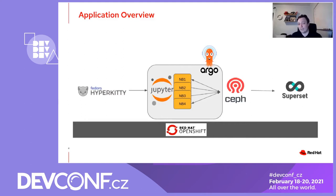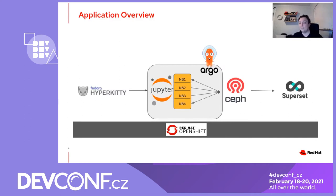Apache Hive and Superset work in tandem to serve as the front-end and user interaction layer of the application. As long as the Argo workflow runs and the notebooks are pushing new results to our Ceph remote storage, the Superset dashboard remains up to date. And of course, all of this is running on top of OpenShift.